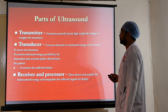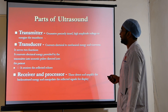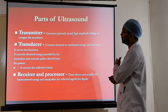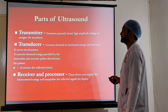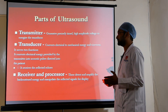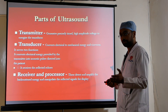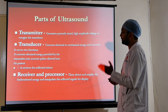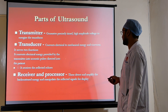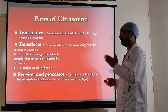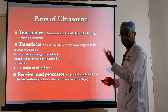The parts of an ultrasound machine: the transmitter generates precisely timed high amplitude voltage to energize the transducer. The transducer converts electrical energy to mechanical energy and vice versa — it converts electrical energy into acoustic pulses directed into the patient, and receives reflected echoes. The receiver and processor detect and amplify the back-scattered energy, manipulate the reflected signals, and produce the final ultrasound image.